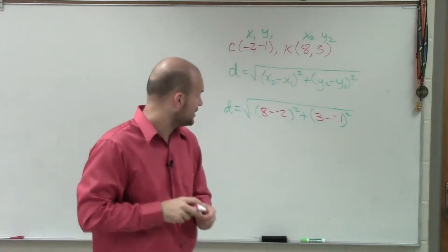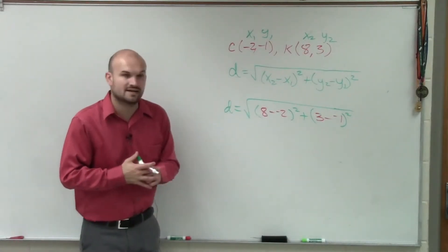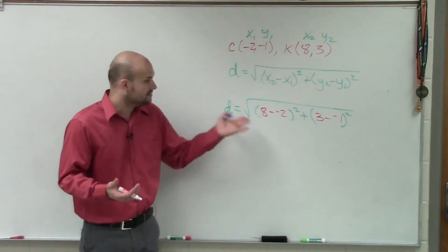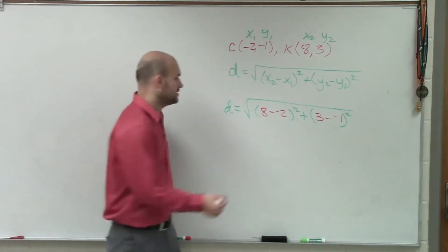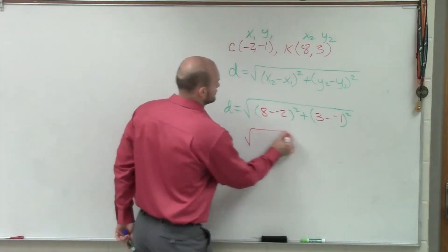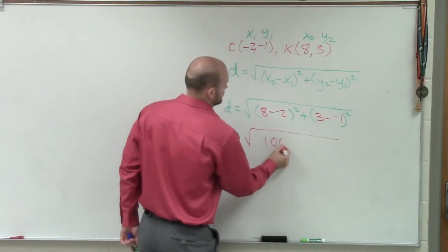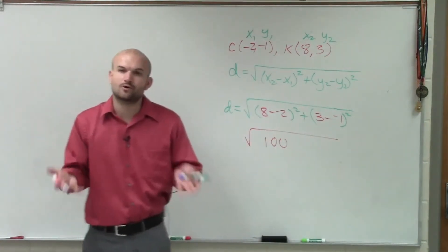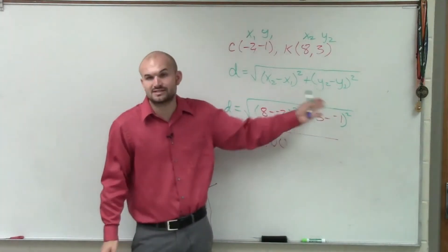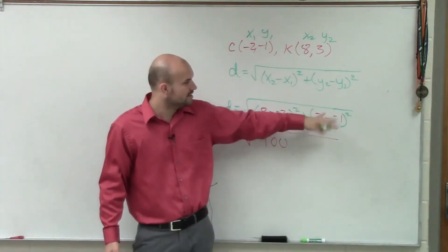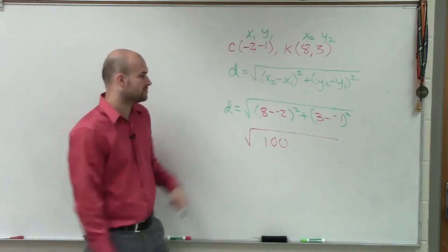So then, what I'll go ahead and do is now simplify this. So 8 minus a negative 2 is going to be 10. 10 squared is going to be 100. Remember, what we're doing here is we're applying our order of operations. We're doing inside the parentheses first, and then we're doing the powers. 3 minus a negative 1 is 4. 4 squared is 16.